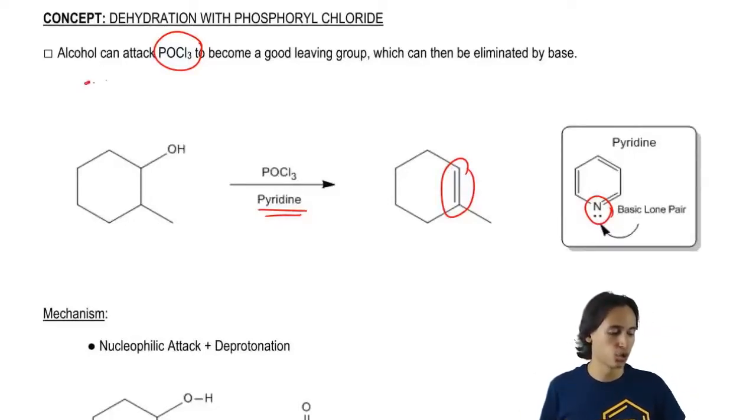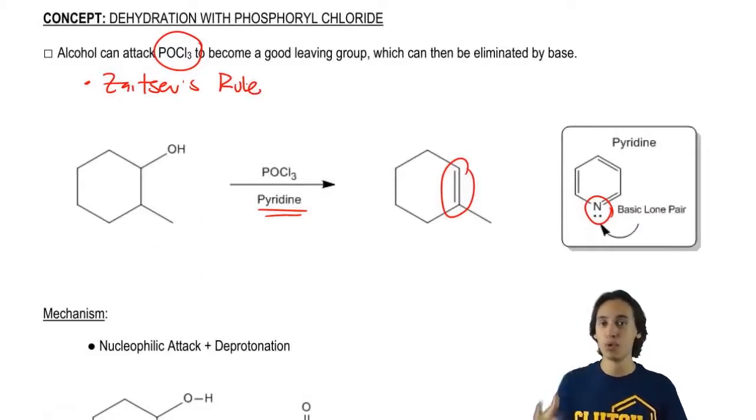And it turns out that for these reactions, we're always going to favor the Zaitsev product. Zaitsev's rule still applies. So what that means is the most substituted product is the one that I favor.